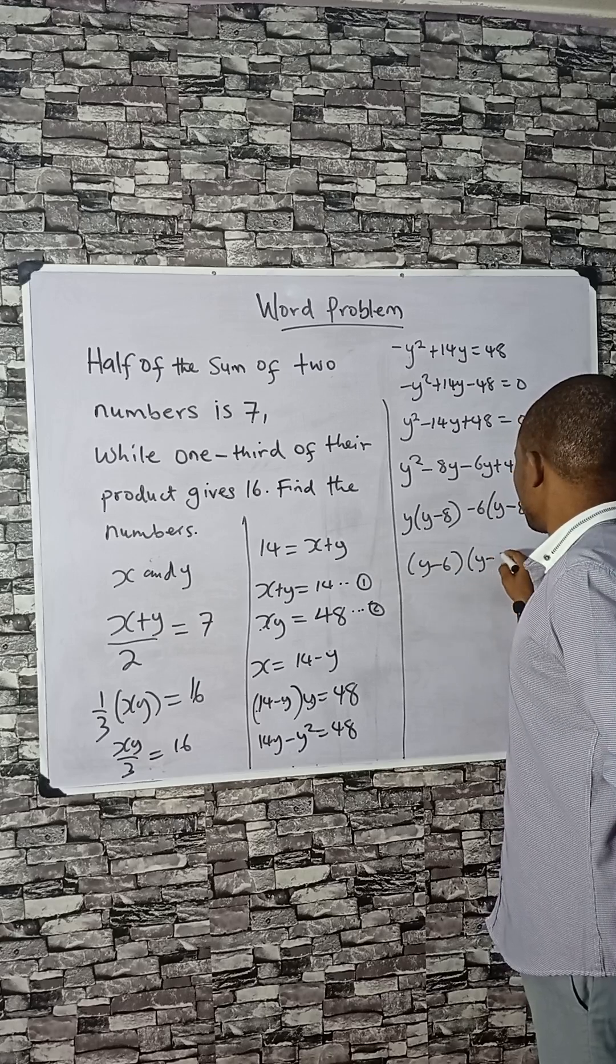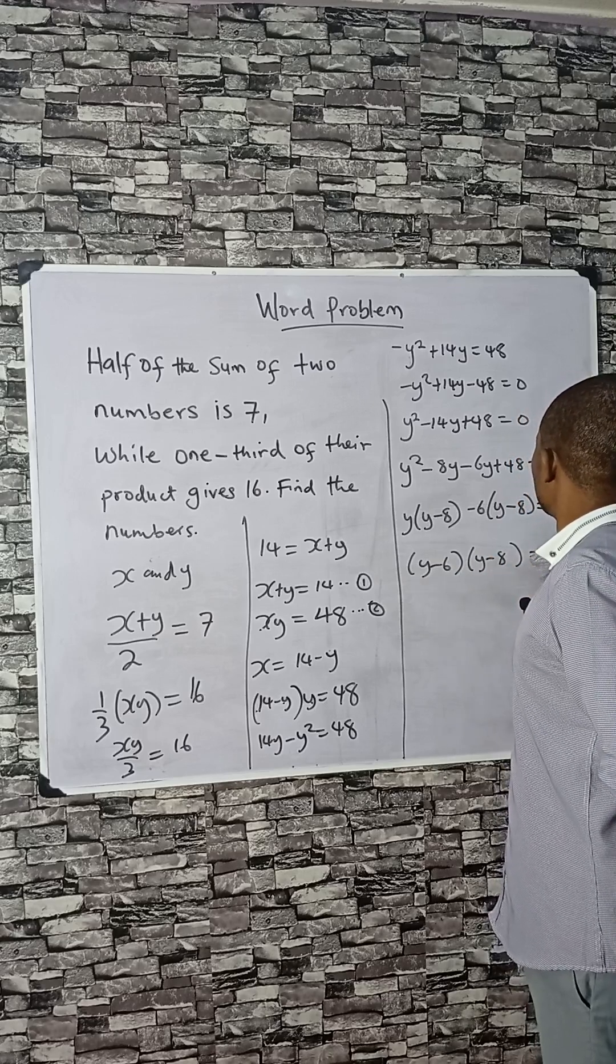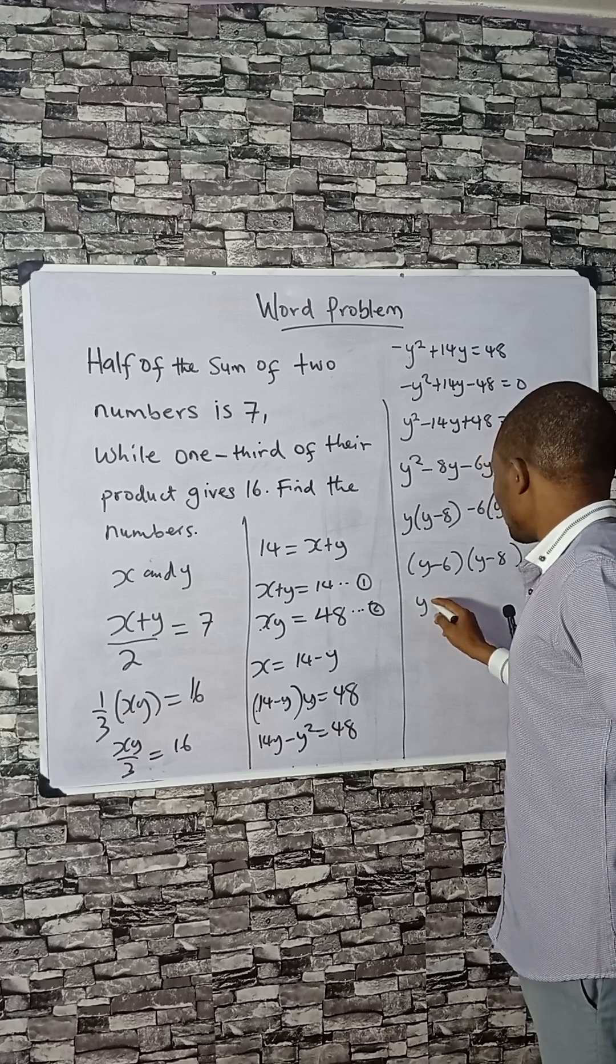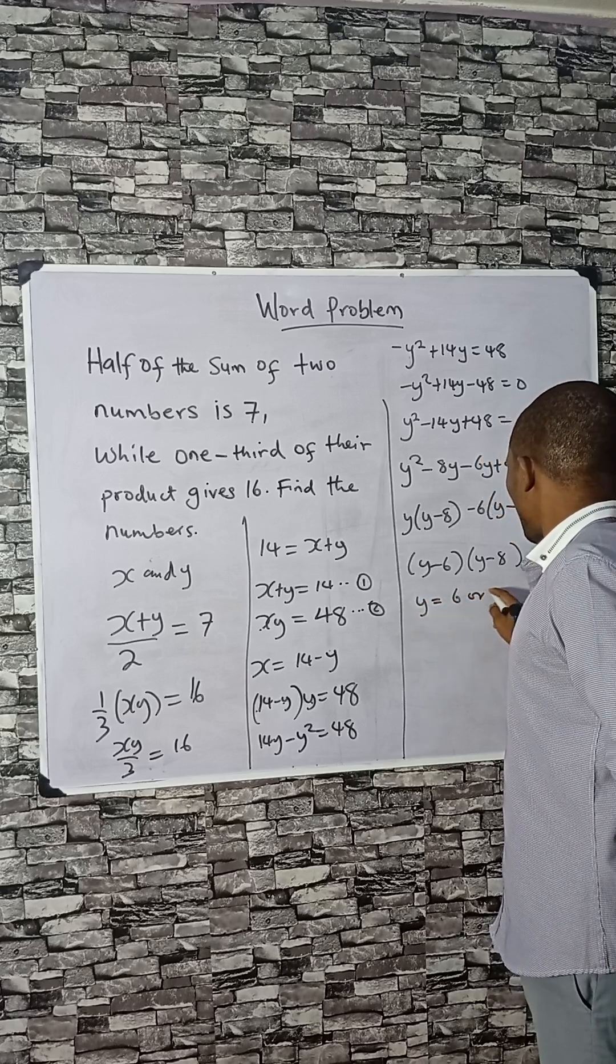So y minus 6 times y minus 8 equals 0, and we have y to be equal to 6 or 8. That is for y.